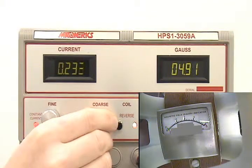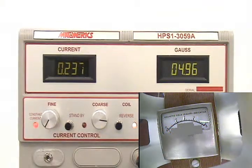At 4.96 Gauss in the coil, the magnetometer reads 25 Gauss.